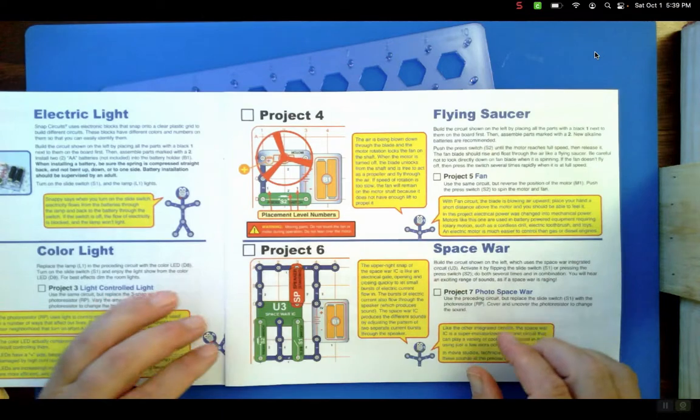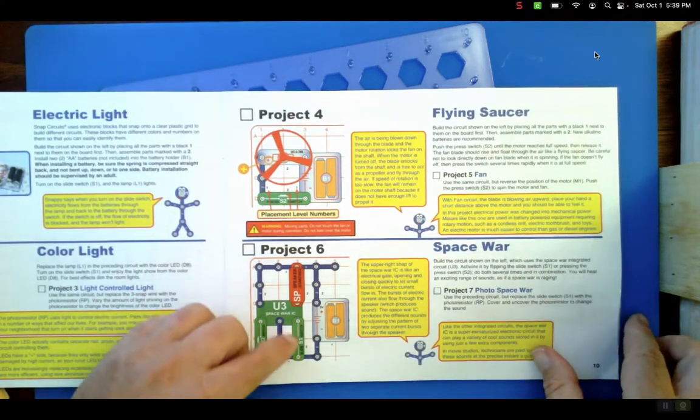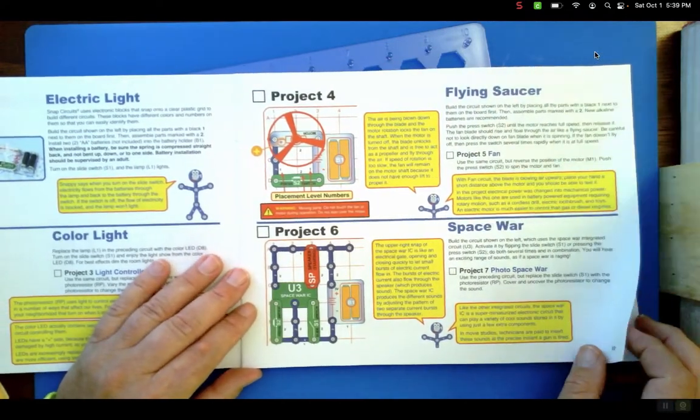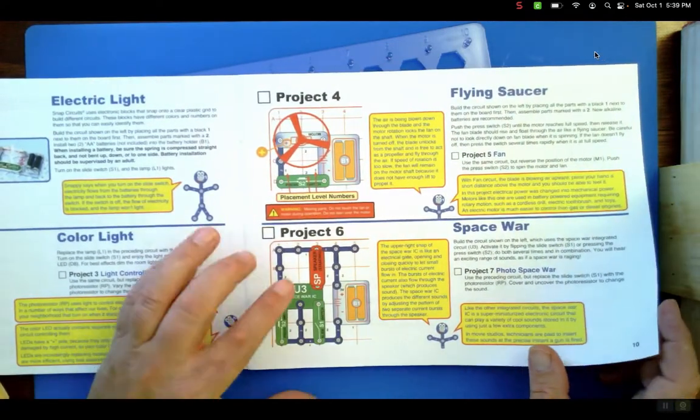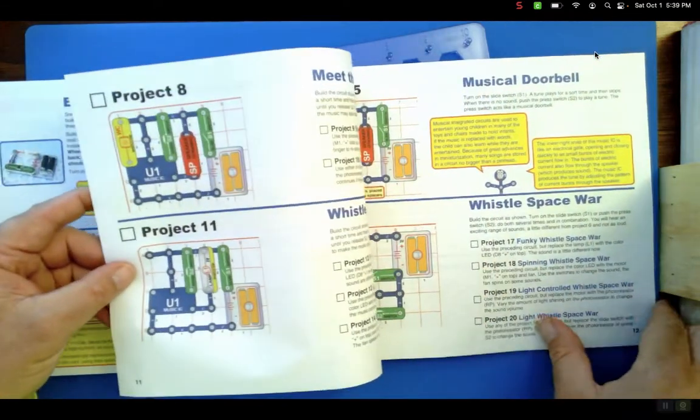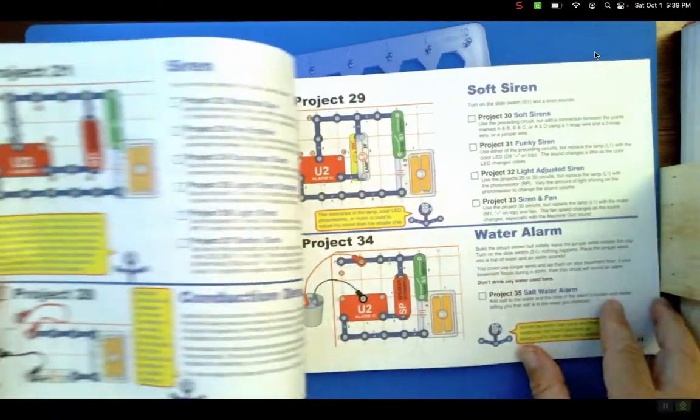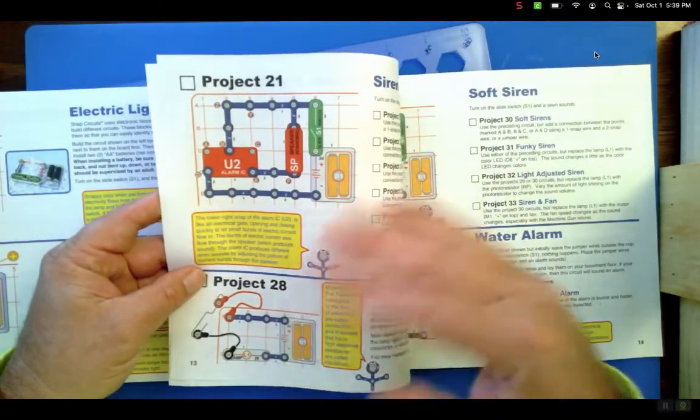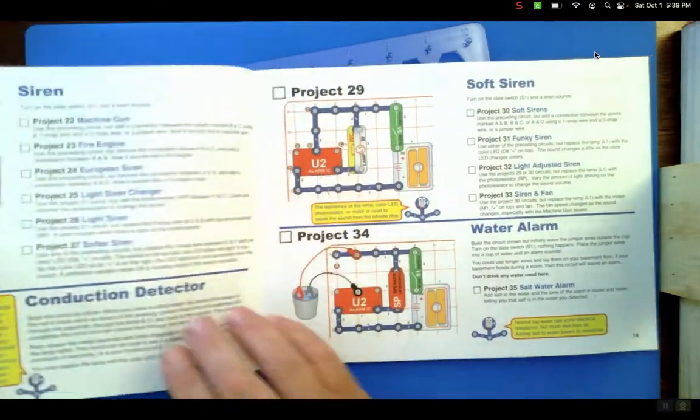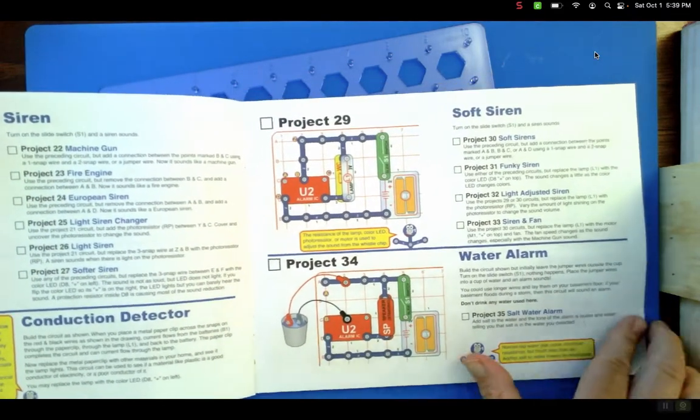They've got these nice little series circuits, then they jump to the integrated circuit. I think they should jump to parallel first before they jump to their integrated circuit ones. With their projects, they don't go to parallel. Eight, nine, ten, eleven, all doing multiple hookups.